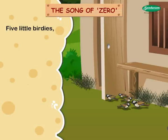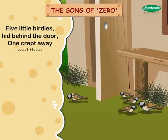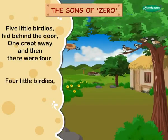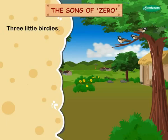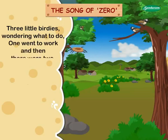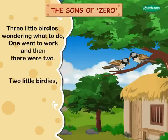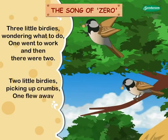Five little birdies hid behind the door. One crept away and then there were four. Four little birdies sitting on a tree. One went home and then there were three. Three little birdies wondering what to do. One went to work and then there were two. Two little birdies picking up crumbs. One flew away but still there was one.